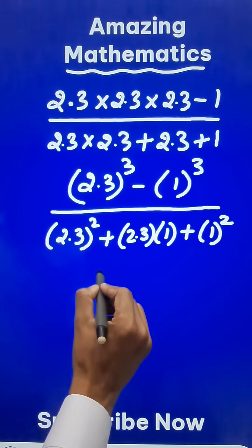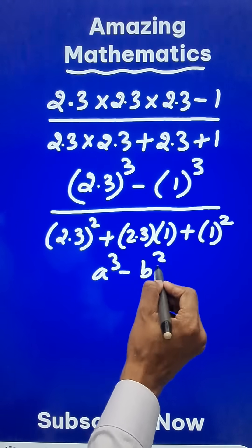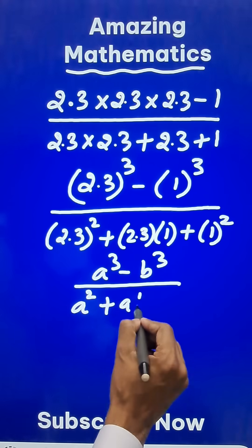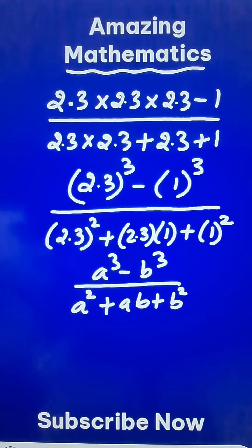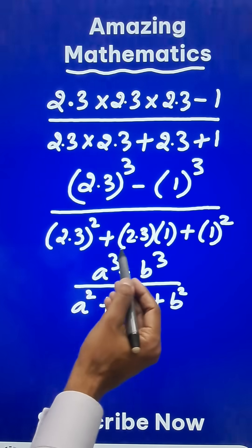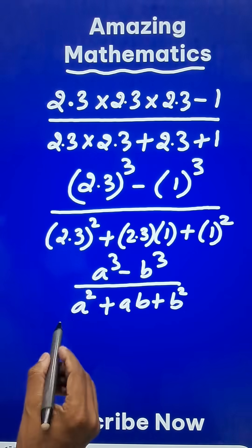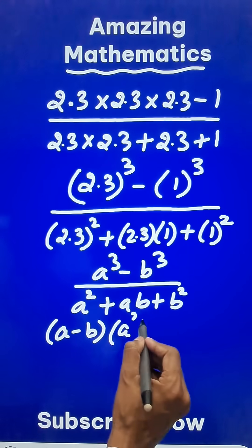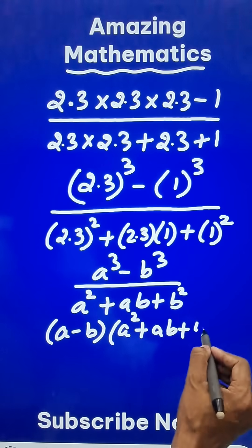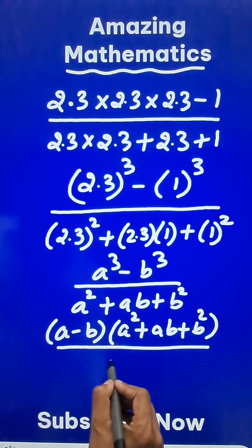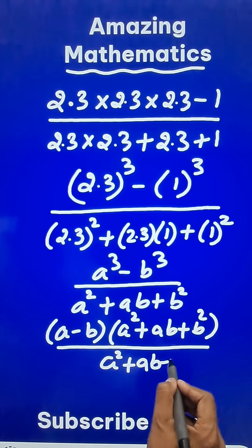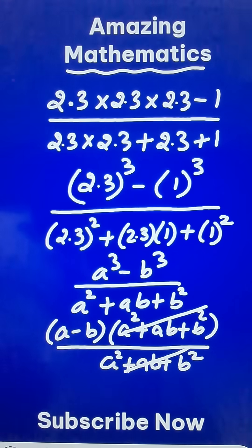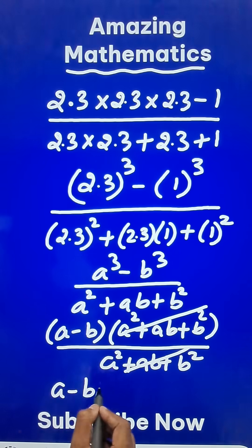a cube minus b cube — so a cube minus b cube in the numerator, and a square plus ab plus b square in the denominator. If you expand a cube minus b cube in terms of its factors, you will have (a minus b) in the numerator followed by the factor (a square plus ab plus b square), and in the denominator you have the same factor (a square plus ab plus b square), which cancels out with the factor in the numerator. So it gives you a minus b as the answer.